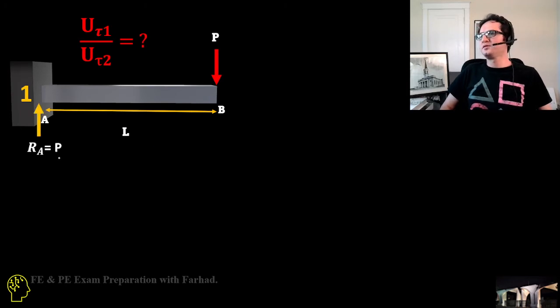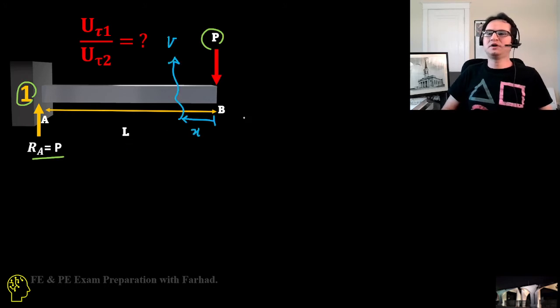First of all, the reaction at A for the first beam is P, which is canceling the only vertical load at the free end. If you cut it through by a length of x from the free end, the shear at a distance x from the free end is V_x equal to P.